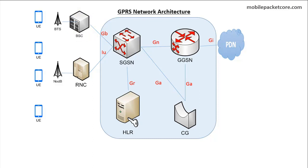Now we know the nodes that exist in the GPRS network architecture. Let's learn the interface names that exist between those nodes. Every interface between two network nodes has a unique interface name, and this interface represents the protocols the nodes are using in the communication between each other.